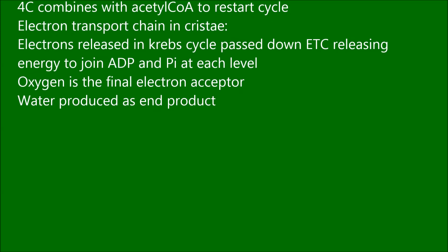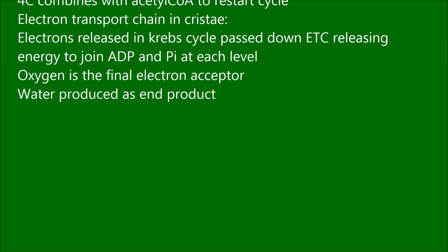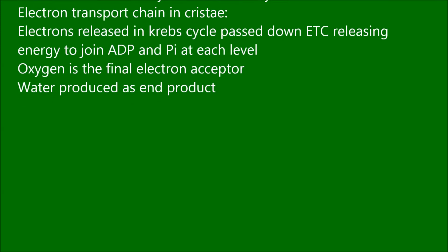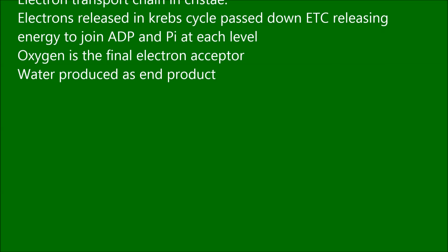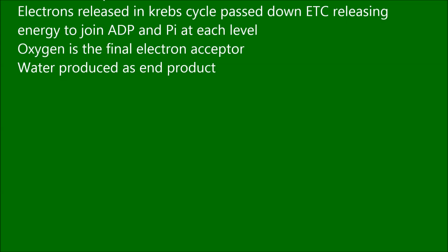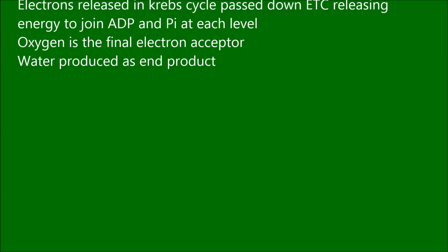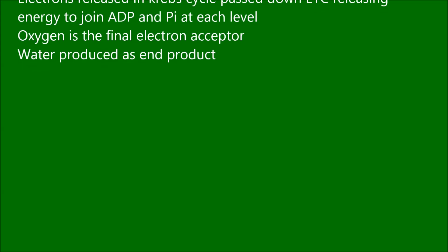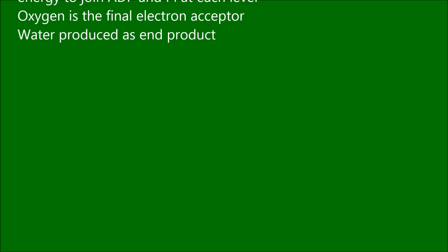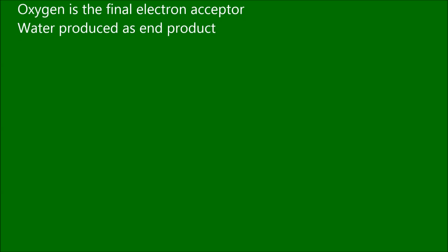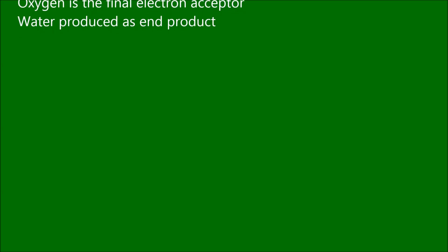Electron transport chain in the cristae: electrons released in the Krebs cycle pass down the electron transport chain, releasing energy to join ADP and phosphate at each level. Oxygen is the final electron acceptor, and water is produced as a product.